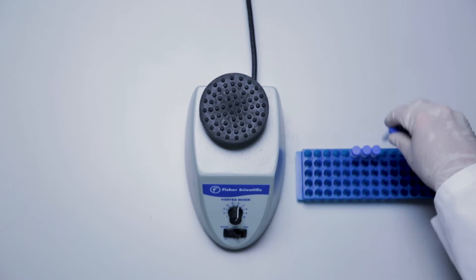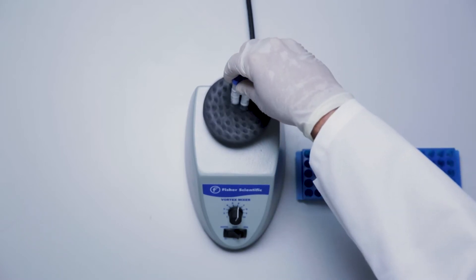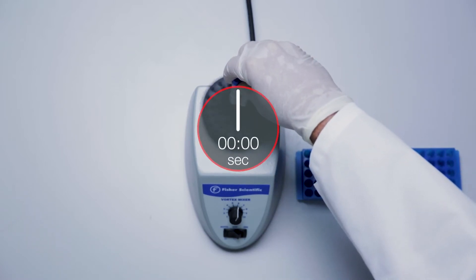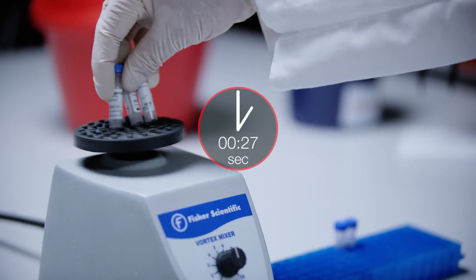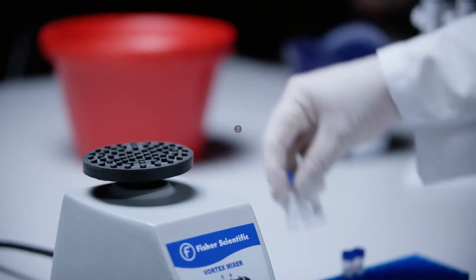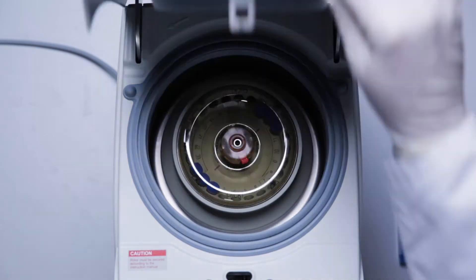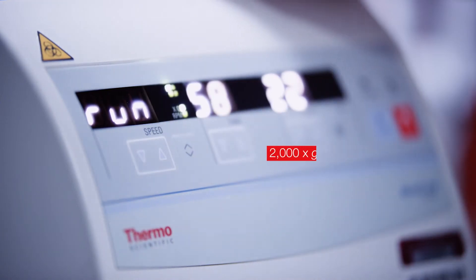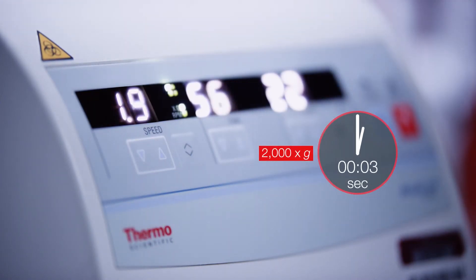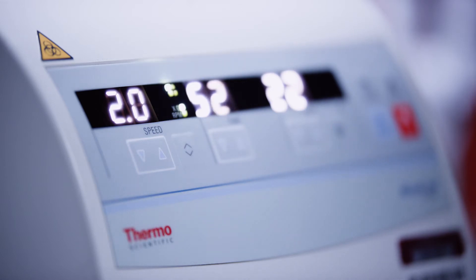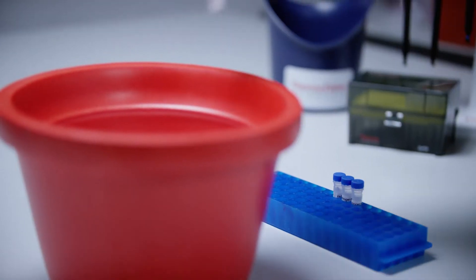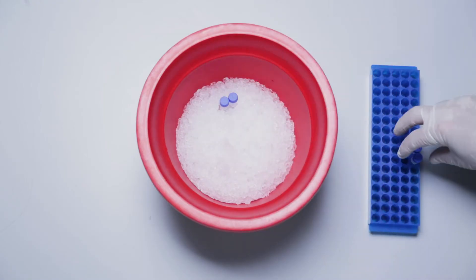Vortex the five antigen standard vials at high speed for 30 seconds. Centrifuge at 2000 g for 10 seconds to collect the contents at the bottom of the vials. Incubate on ice for 10 minutes to ensure complete reconstitution.